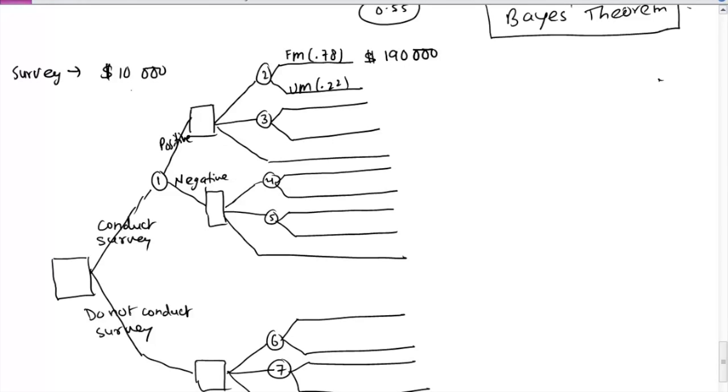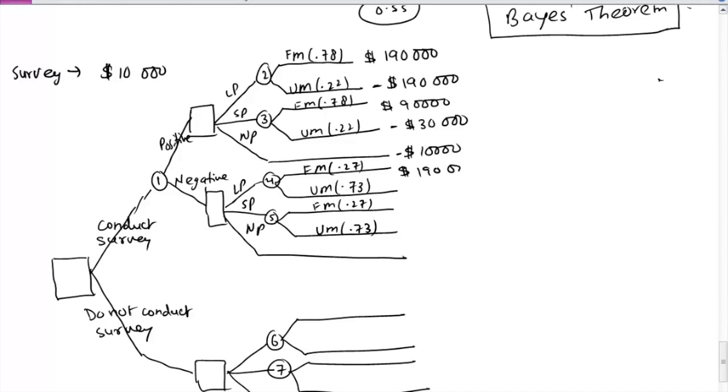So we are getting $190,000 loss. So we do the same thing for small plant. For no plant. This is large plant, small plant, no plant. No plant it is going to be 0, but because we are spending $10,000, so obviously it will be loss. Now if you go to the negative, so there also we have large plant, small plant, no plant. $200,000 because we didn't pay any fee for the survey.